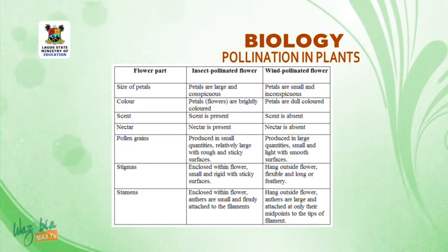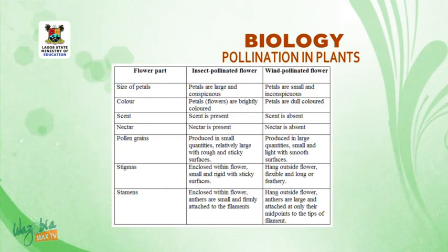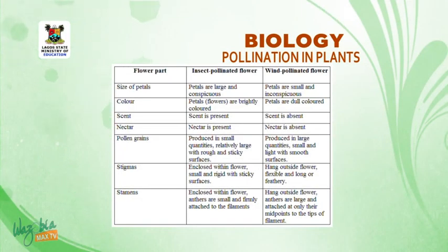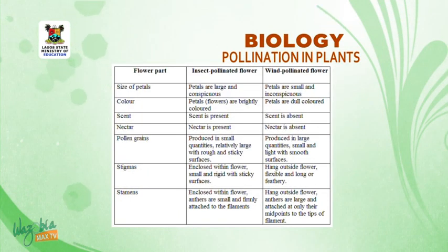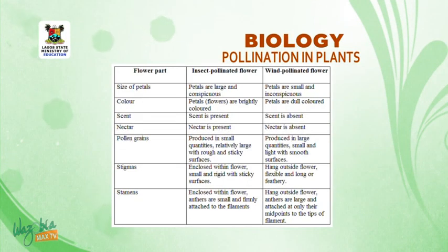Under stigmas: insect-pollinated flowers have stigmas enclosed within the flower; they are small and rigid with sticky surfaces. Wind-pollinated flowers have stigmas that hang outside the flower; they are flexible and long, or feathery.